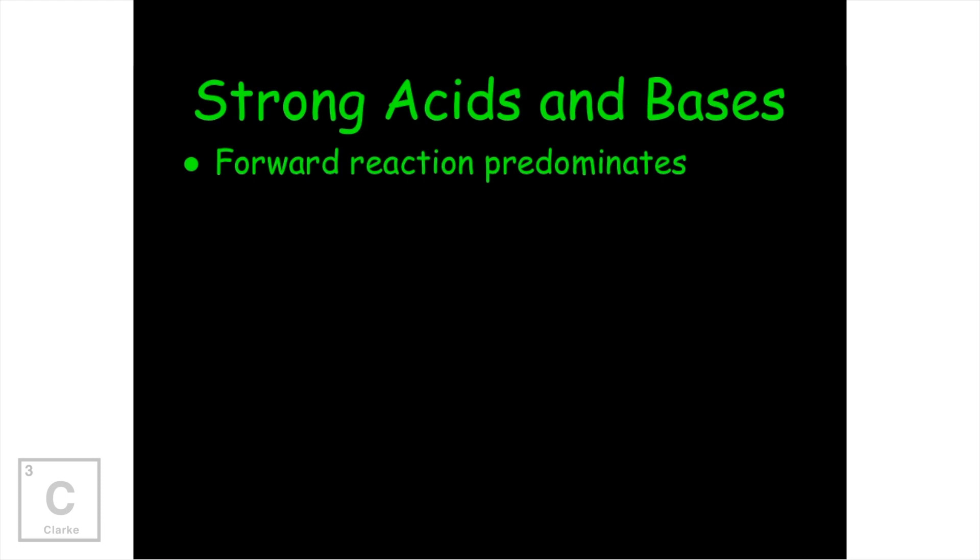Let's go ahead and talk about what makes a strong acid a strong acid and some properties of strong acids and bases. So strong acids and bases, that reaction is going to proceed forward. In a previous lesson, we talked about equilibrium and how reactions are reversible. If you have a strong acid in a reaction, that reaction is going to proceed forward towards the products. The forward reaction is predominant.